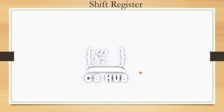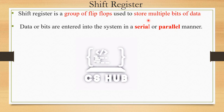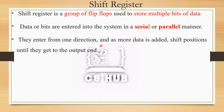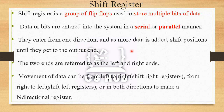A shift register is a group of flip-flops used to store multiple bits of data. Data or bits are entered into the system in a serial or parallel manner. They enter from one direction and as more data is added, they shift positions until they go to the output end. The two ends are referred to as left and right ends. Movement of data can be from left to right (shift right register), right to left (shift left register), or in both directions to make a bi-directional register.